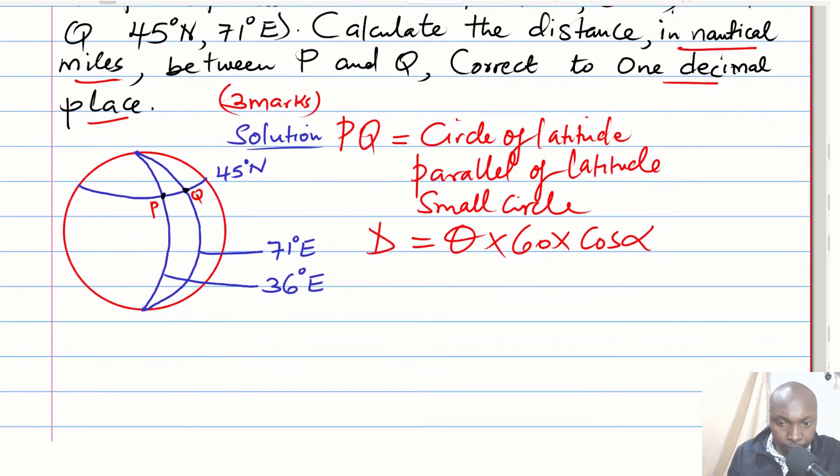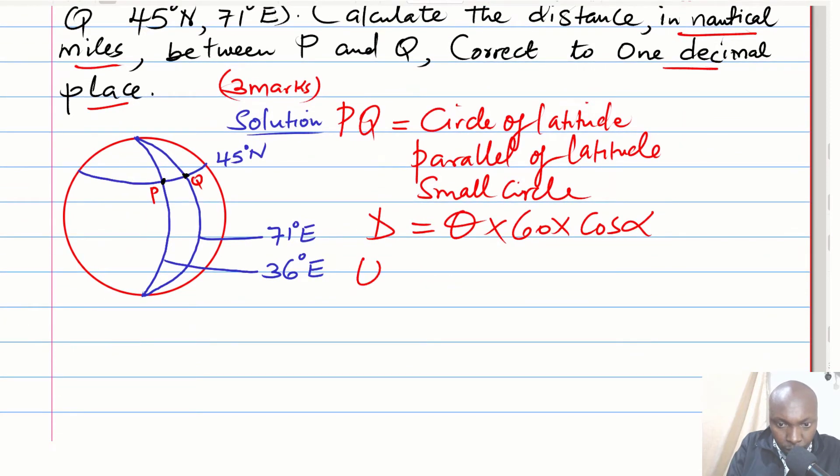In this case, the longitude difference will be obtained by getting the longitude of P and subtracting the longitude of Q. When they lie on the same side—both of them are to the east—you subtract to get the longitude difference. If one was to the east and the other to the west, you would add.